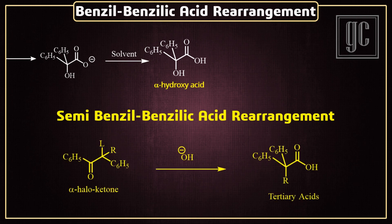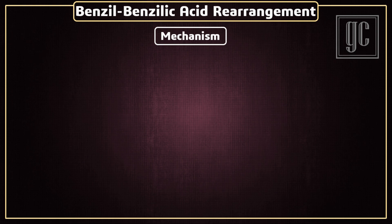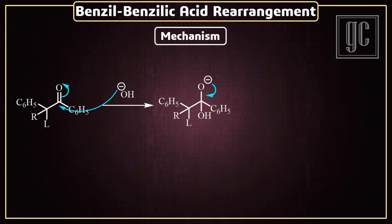Next is the semi-benzylic rearrangement. This reaction takes place in alpha-halo ketones, and rearranged acids are formed as final products. In the mechanism, under basic conditions, a nucleophile attacks the carbonyl carbon atom. After rearrangement of pi electrons, the alkyl group attacks the backside of the leaving group, which is substituted from the molecule, and the final product acids are formed.